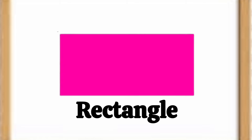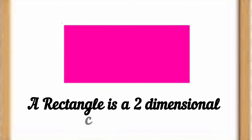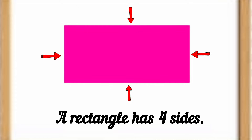Hello kids! Today we will learn about rectangle shape and rectangle shaped objects. A rectangle is a two-dimensional closed shape. Our rectangle has four sides.